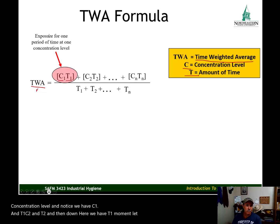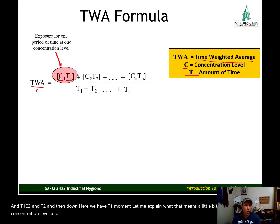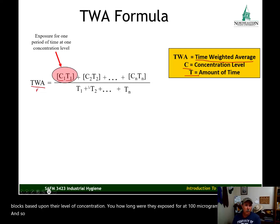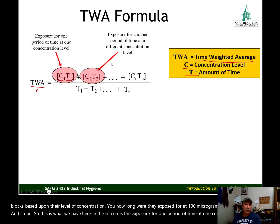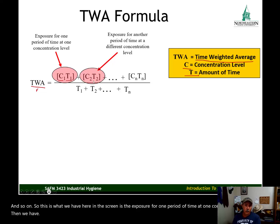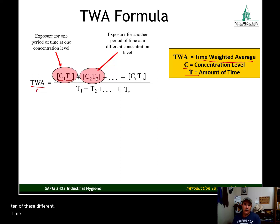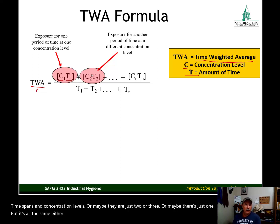C1 and T1 represent a concentration level and time span for one exposure period. What we're doing is breaking down the worker's exposure into blocks based upon their level of concentration — how long were they exposed at 100 micrograms per cubic meter, and so on. Throughout the workday there may be eight or ten different time spans and concentration levels, or maybe just two or three, or maybe just one.